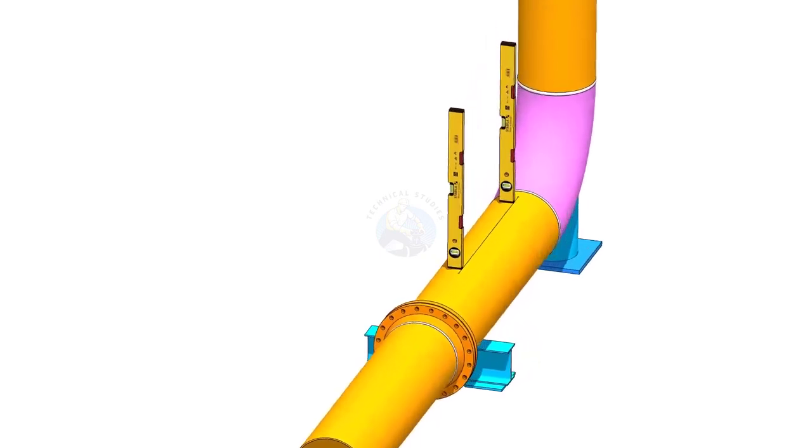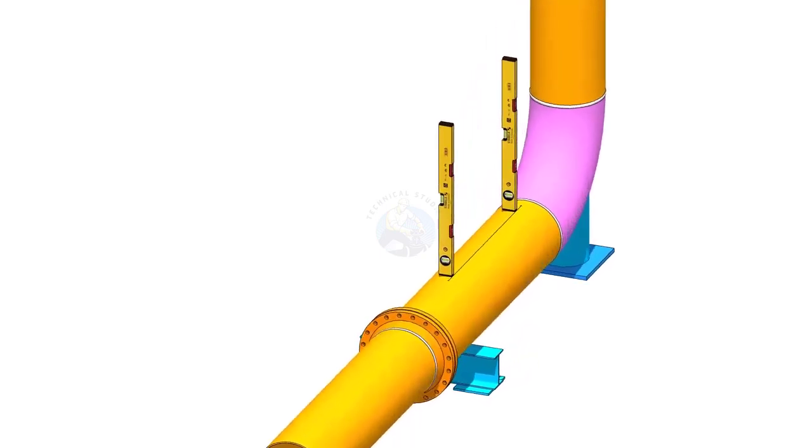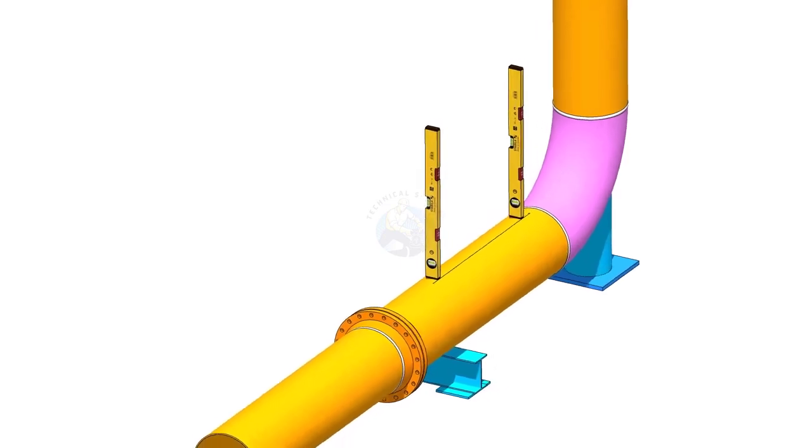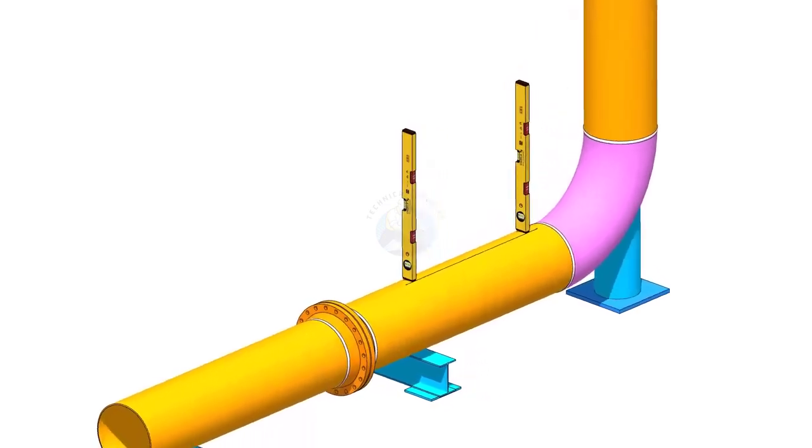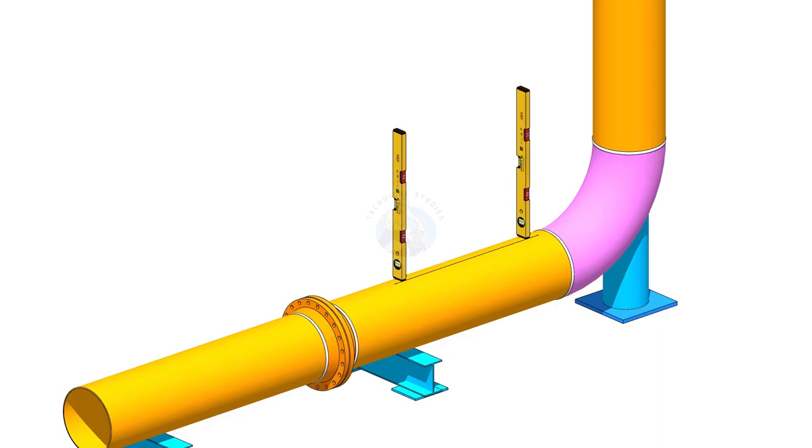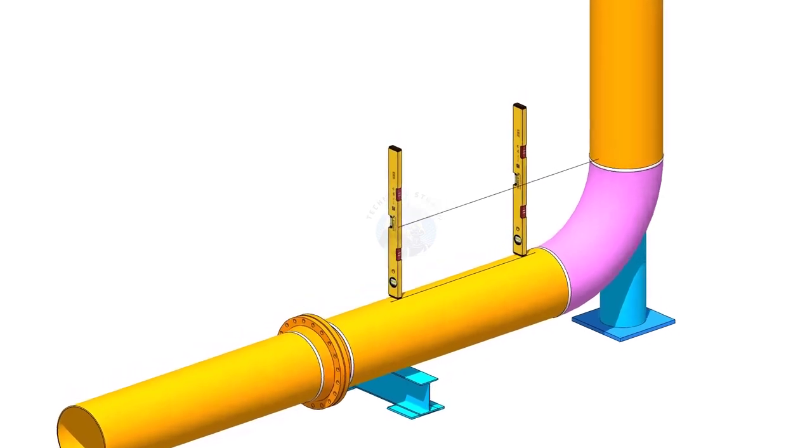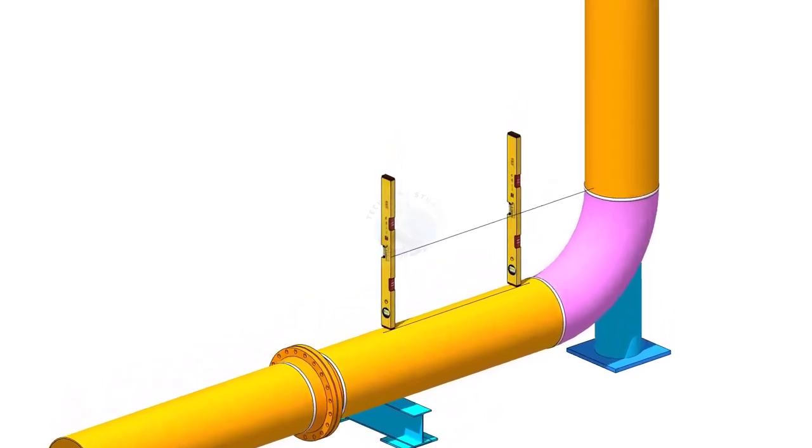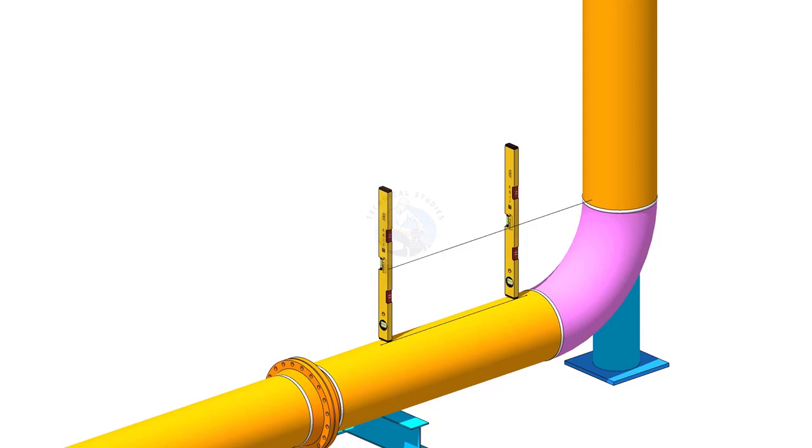Hold two level bottles on the line vertically as shown. Transfer the levelness on the vertical pipe on two locations as shown. You can use line thread or a straight edge.